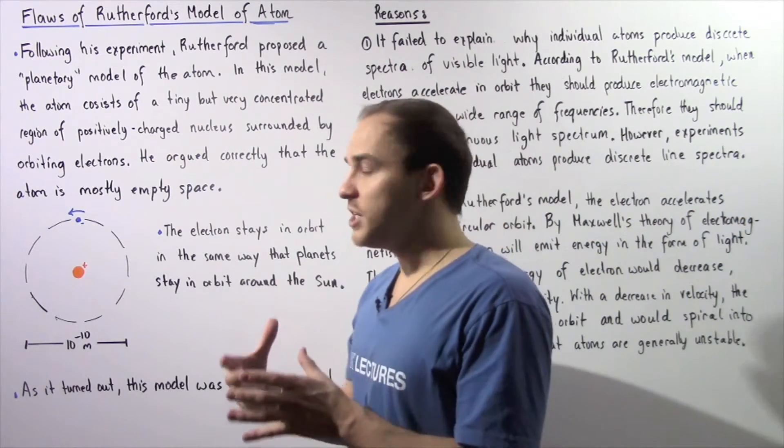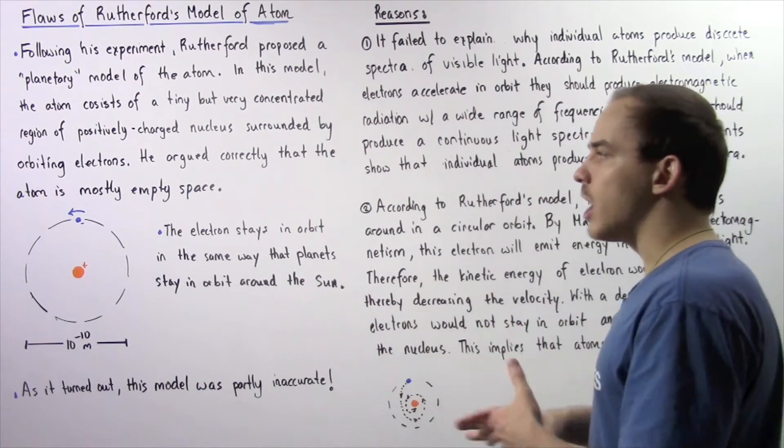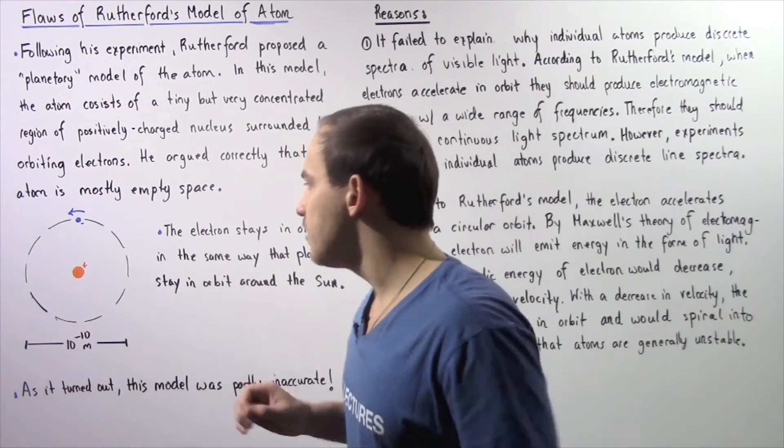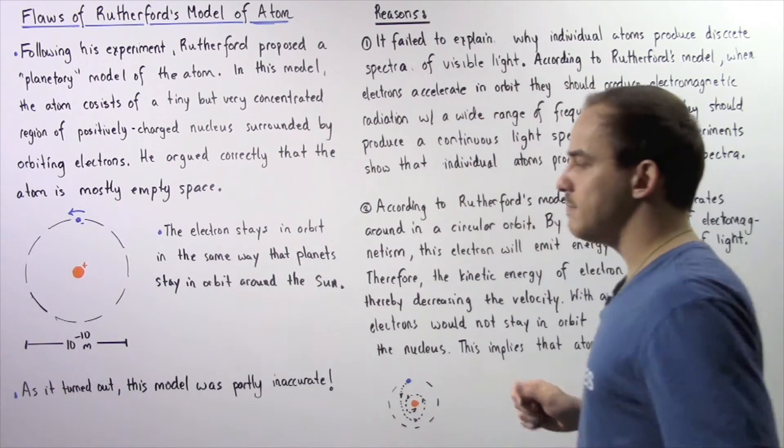Now Einstein was later able to use Brownian motion to essentially estimate the diameter of this particular atom and he found that diameter is equal to about 10 to the negative 10 meters.